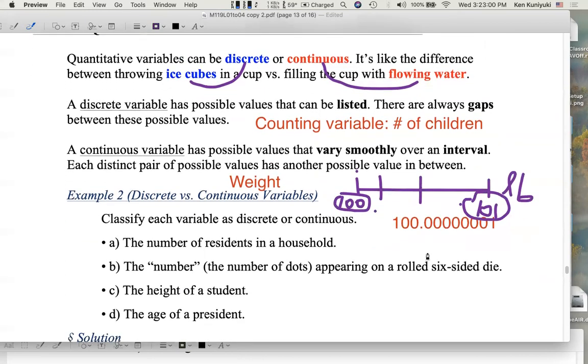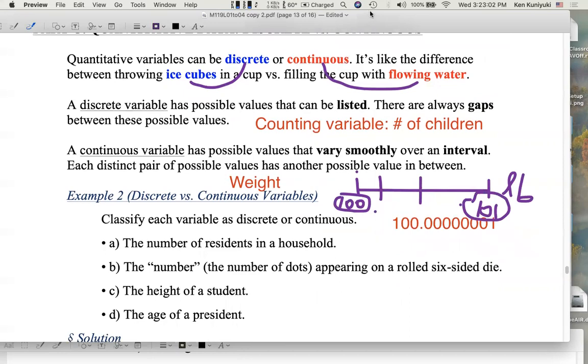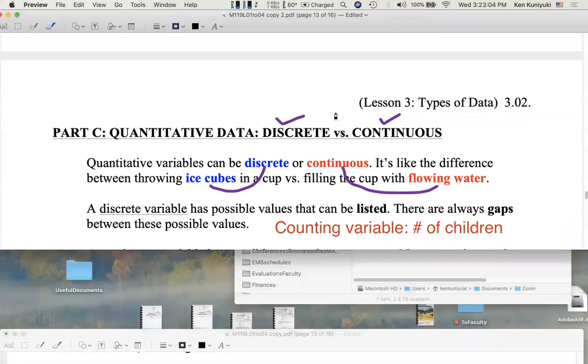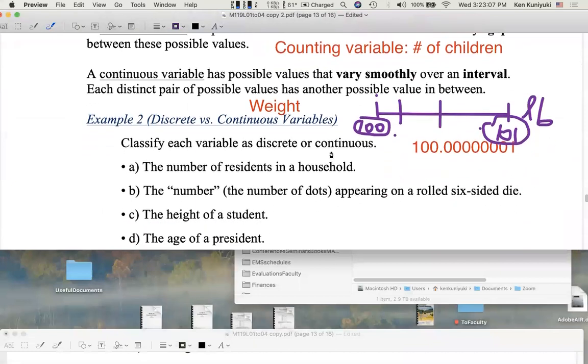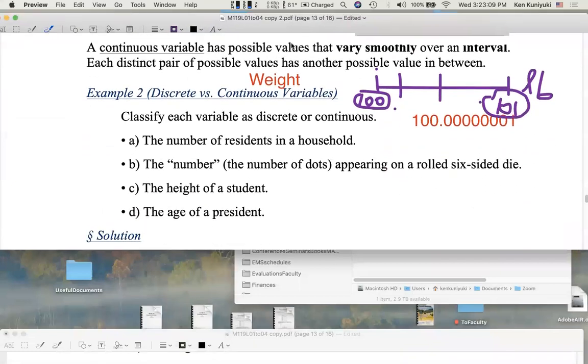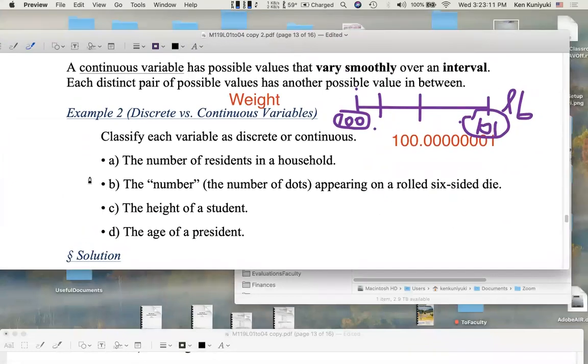All right. Do these examples on your own. Which of these are discrete and which are continuous? A, the number of residents in a household. B, the number, that is the number of dots, appearing on a six-sided die that you roll. C, the height of a student. D, the age of a president. That last one might be tricky.